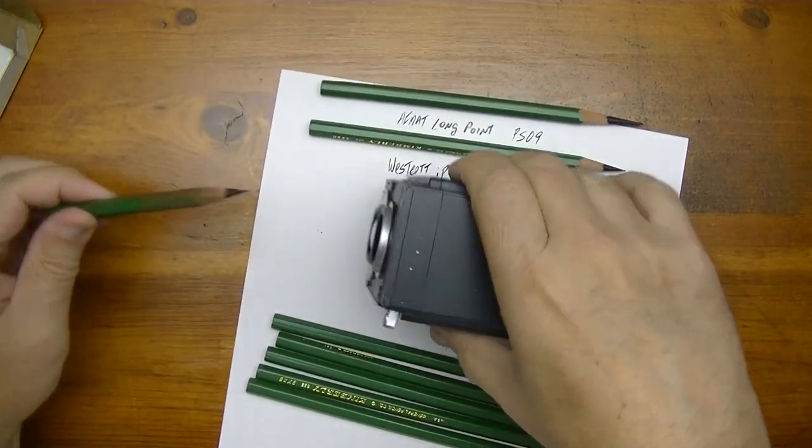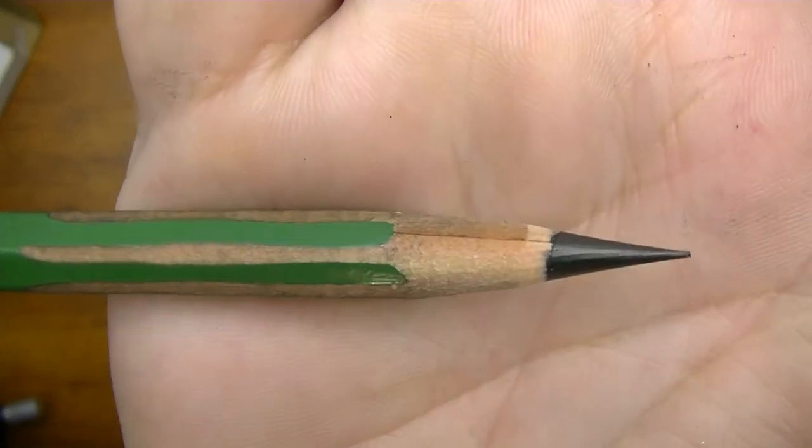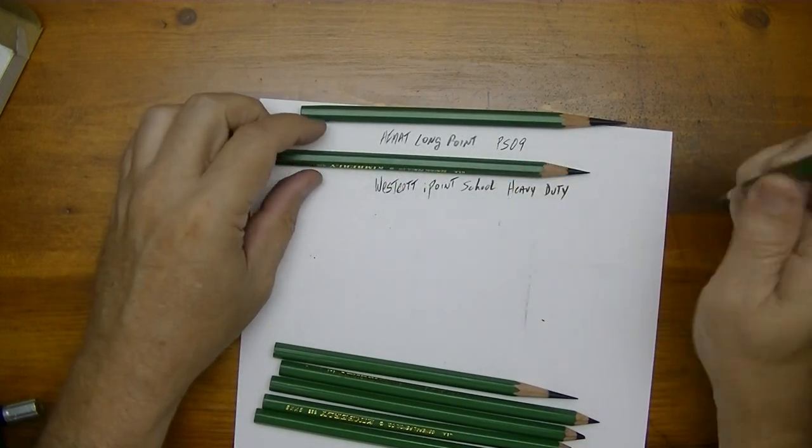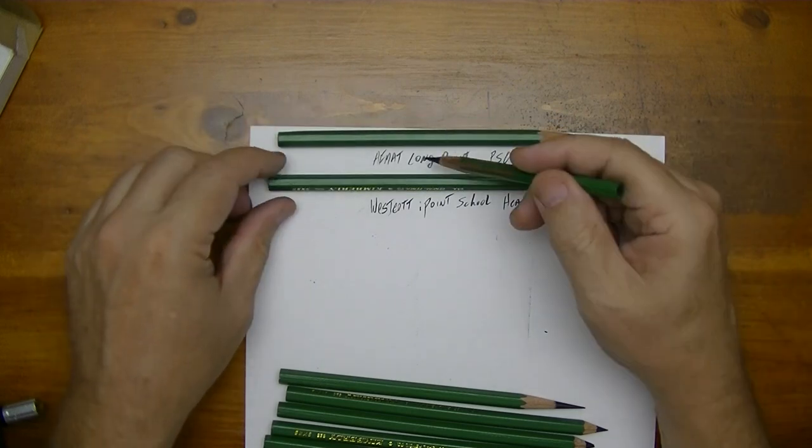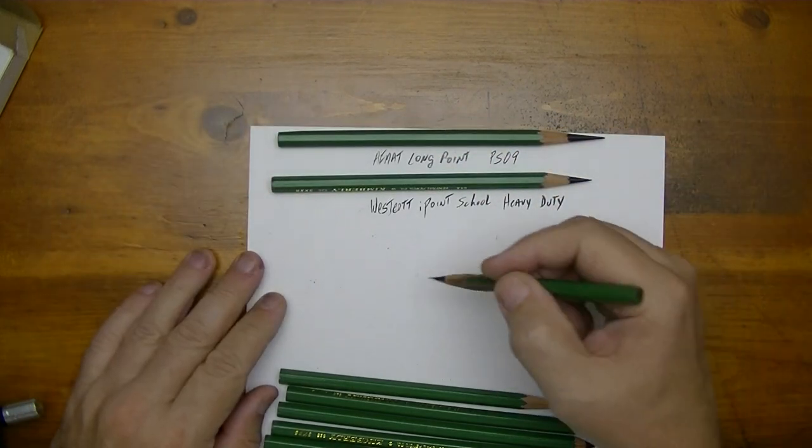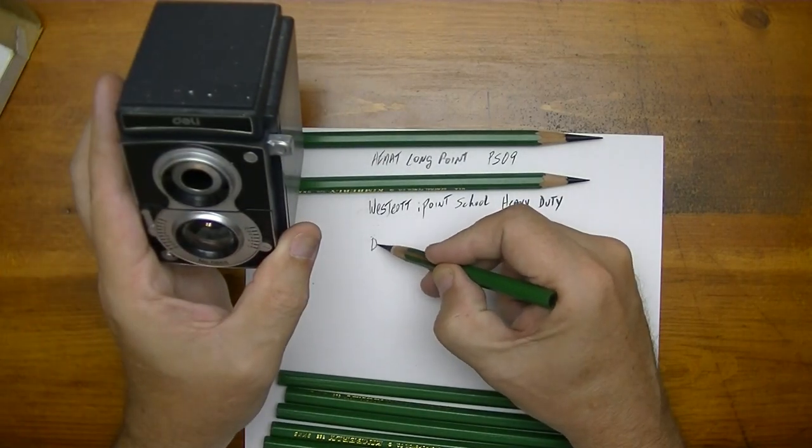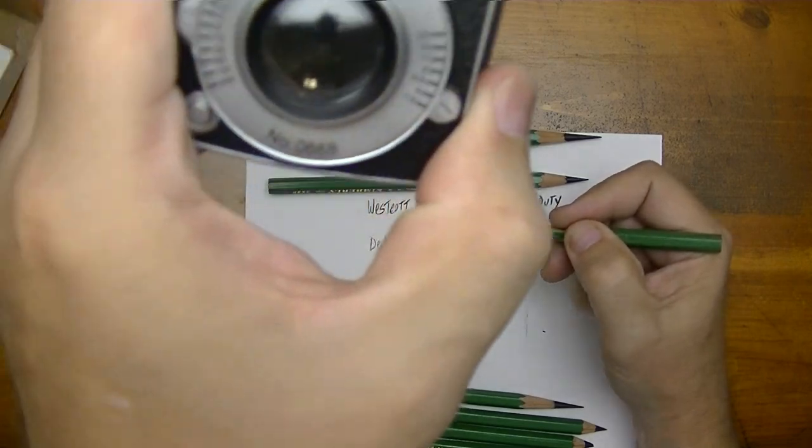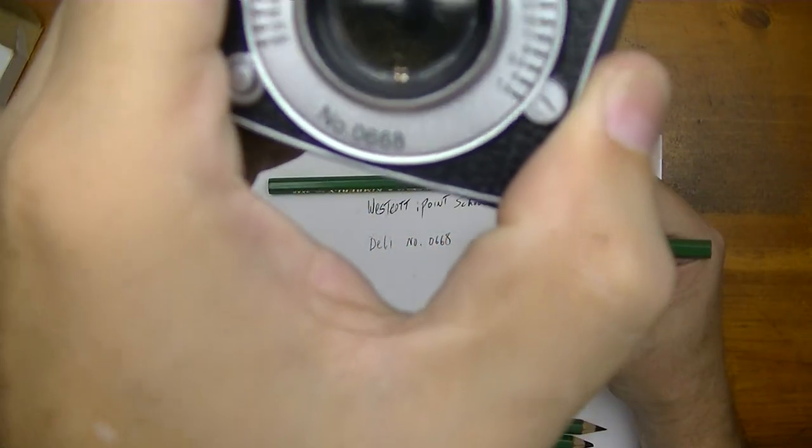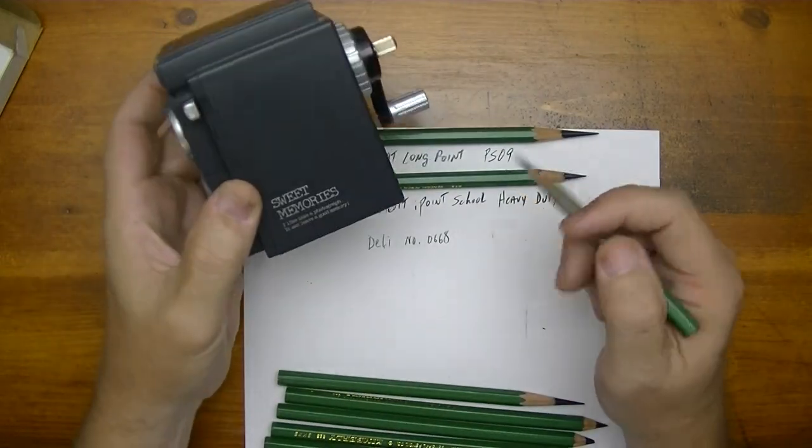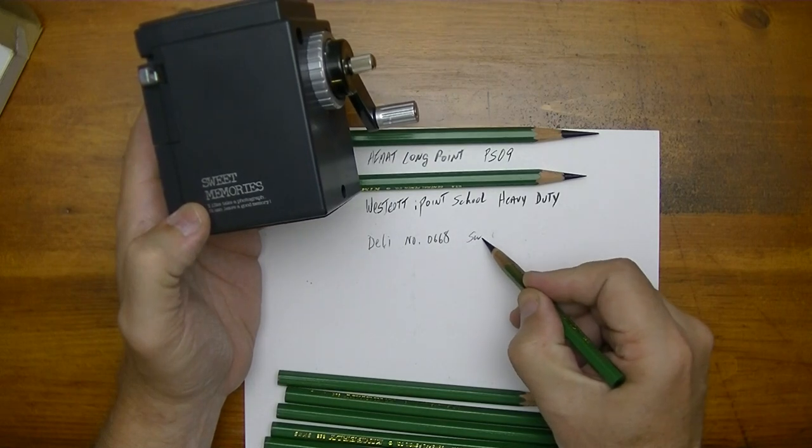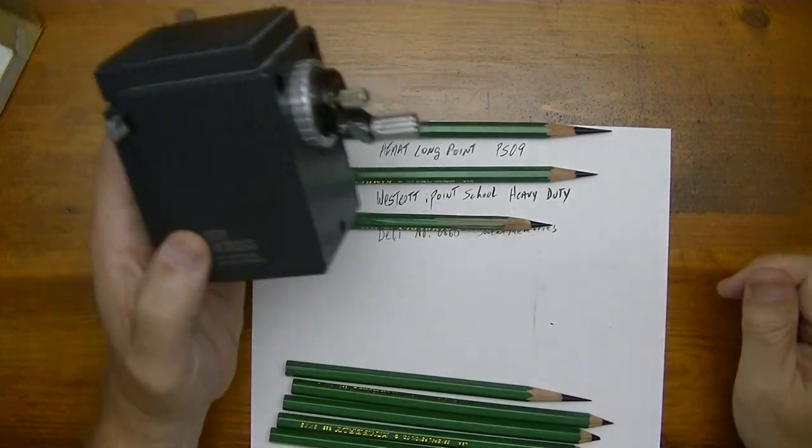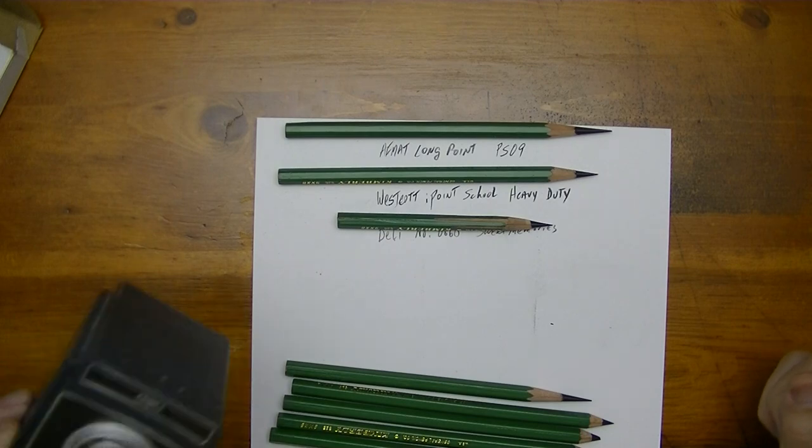Okay, well that's all it's going to do and as you can see that's a pretty decent point too. It's about equal with the Westcott, but everything pales in significance to the Afmat long point PS09. So I'm going to just put here this is the Deli. It says number 0668 right there. I don't know if that's actually a part number or not, but on the side it says Sweet Memories, so I'll write that in there too. Sweet memories. So this is another option for sharpening your 9xxBs to a nice point.